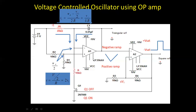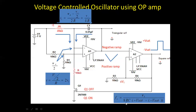The circuit continues running: at the integrator output we get a triangular wave, and at the Schmitt trigger output we get a square wave. As we change Vi, the currents i1 and i change, altering the slope of the negative and positive ramps, and accordingly the square wave output changes — it is directly proportional to the control voltage. The frequency of the VCO is directly proportional to the control voltage and inversely proportional to 8RC times (plus Vsat minus minus Vsat). This is the Voltage Controlled Oscillator implemented using operational amplifiers. Thank you.